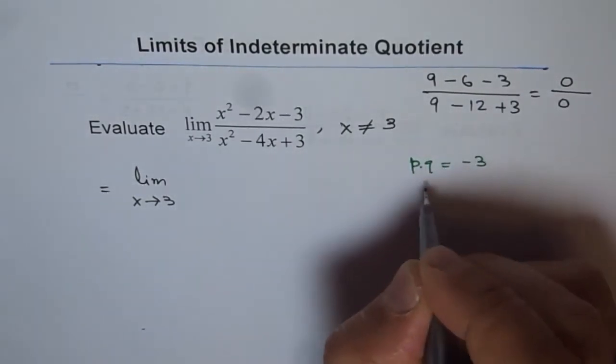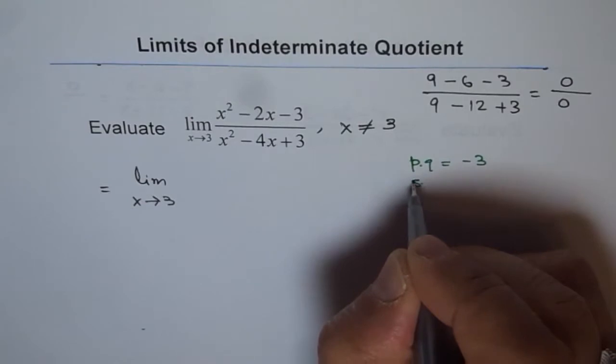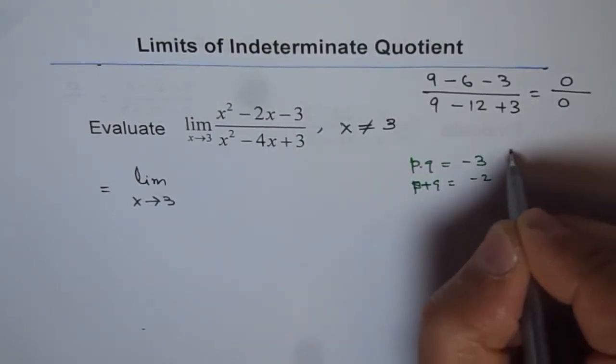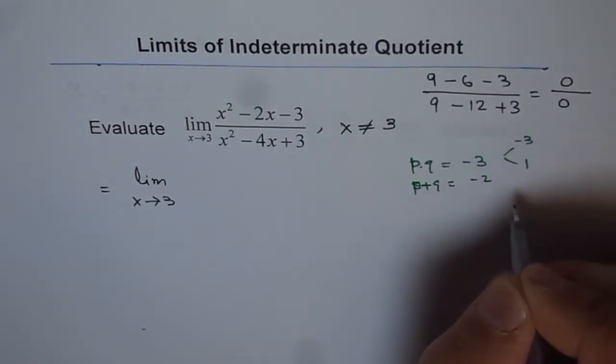should be minus 3, and sum, that means p plus q, should be minus 2. So the two numbers can be minus 3 and plus 1, right?